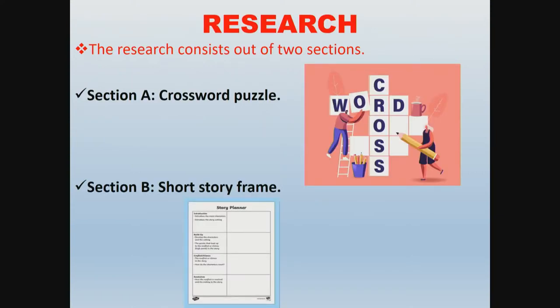Stage one entails the research, which consists of two sections. Section A is the crossword puzzle — basically questions about the elements of the short story, so you must research and find out what the elements are. Your teacher will handle this with you in class, so listen attentively and research in order to complete the crossword puzzle.